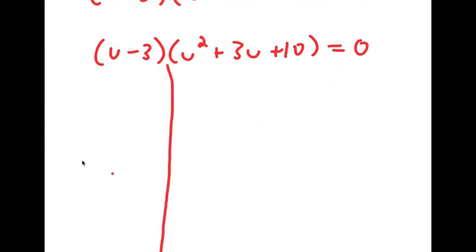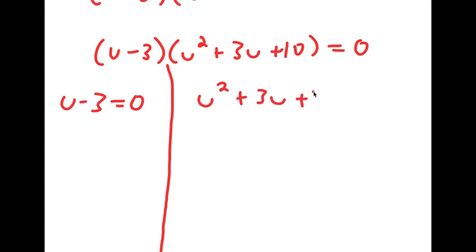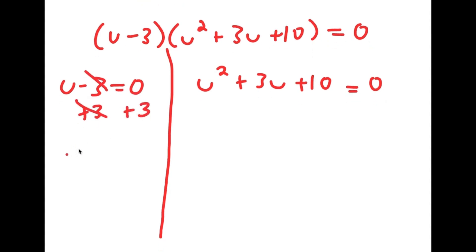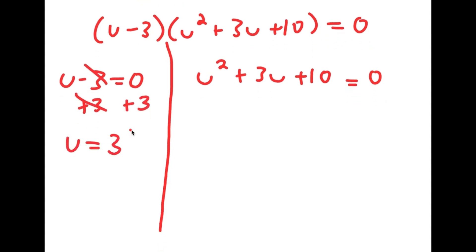This gives me two equations: u minus 3 equals 0, and u squared plus 3u plus 10 equals 0. For u minus 3 equals 0, I add 3 on both sides and get u equals 3.